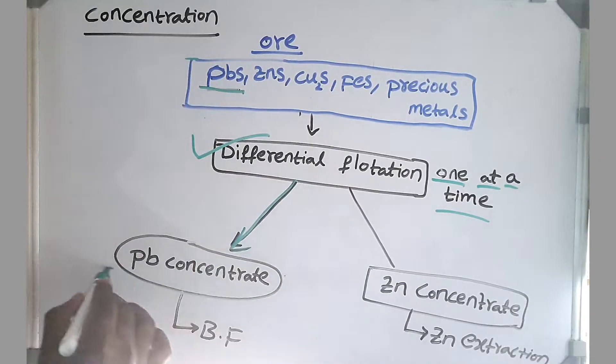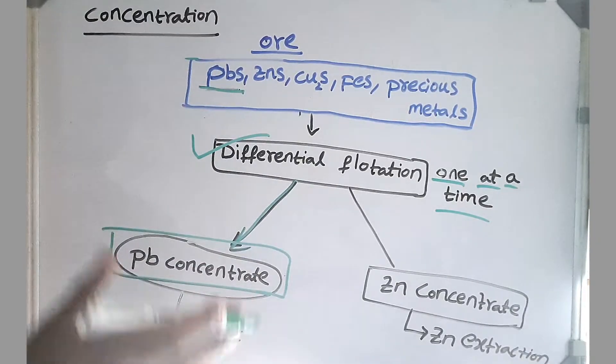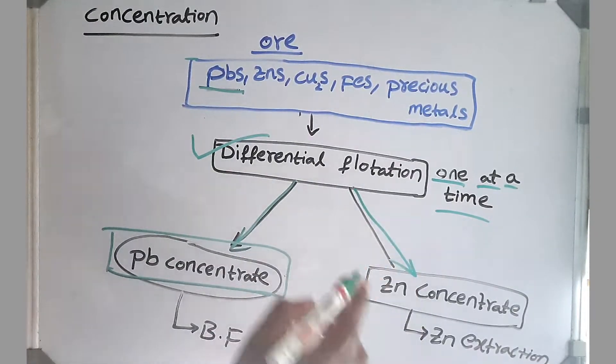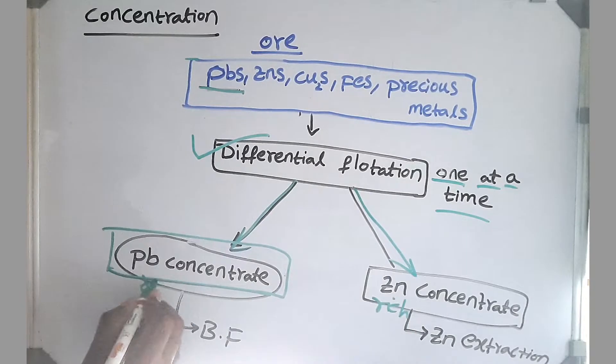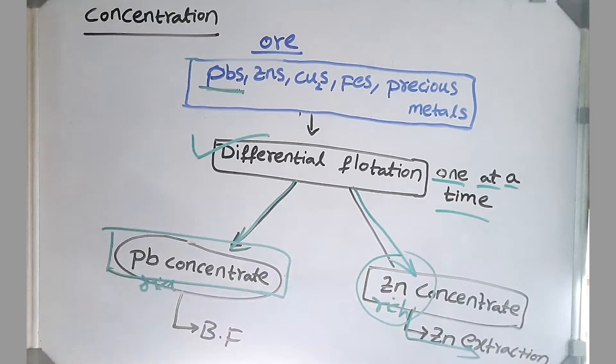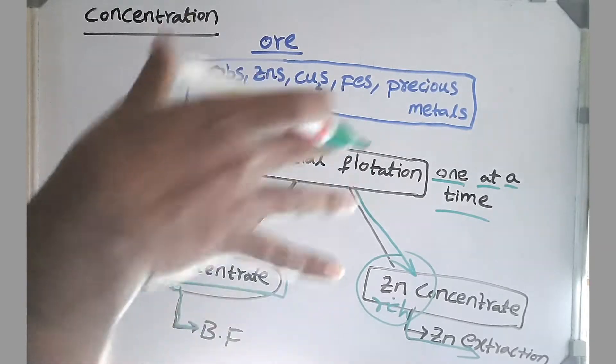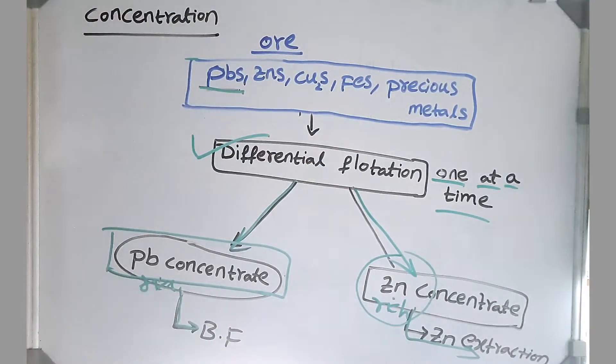After this we get a concentrate, lead concentrate. This consists of mostly lead and another is zinc concentrate. This is zinc rich concentrate and this is lead rich concentrate. So this goes for the zinc extraction process and lead rich concentrate is our main raw material for blast furnace extraction of lead.